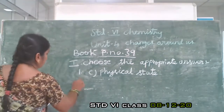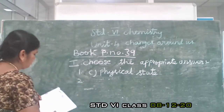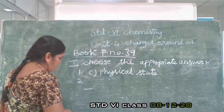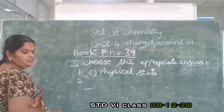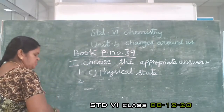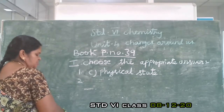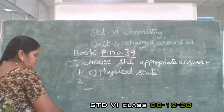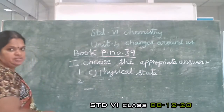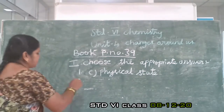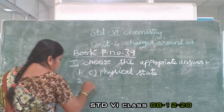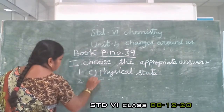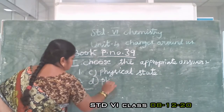Second question: Drying of wet cloth in air is an example of — chemical change, undesirable change, irreversible change, or physical change. Which one? Physical change — option D.